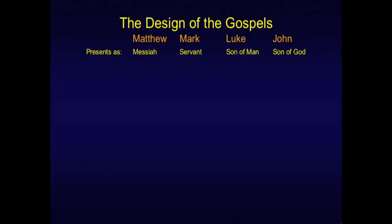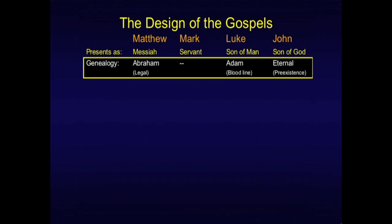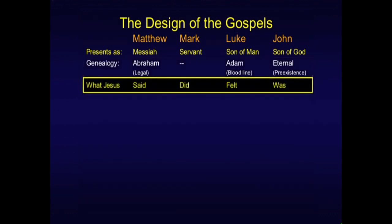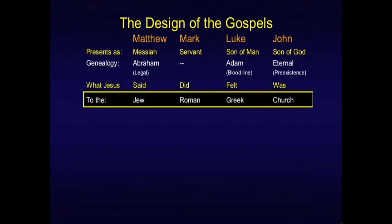The Gospels each have a different focus. Matthew, being a Jew, presents Jesus as the Messiah. Mark presents him as a servant. Luke presents his humanity as the son of man. John presents him as the Son of God. The genealogies reflect that: Matthew's genealogy goes from Abraham down through the legal line through Joseph. Luke's genealogy goes through Mary, starting from Adam all the way through the bloodline. Matthew emphasized what Jesus said, Mark what he did, Luke what he felt, John who he really was. Matthew wrote to the Jew, Mark and Luke to the Gentiles — the Roman and the Greek — and John to the church.